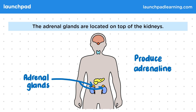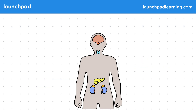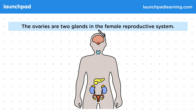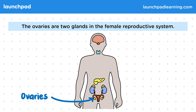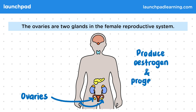Where are the female reproductive hormones produced? The ovaries are two glands in the female reproductive system. In this diagram, they are the small yellow circles either side of the uterus. These glands produce the female reproductive hormones oestrogen and progesterone.